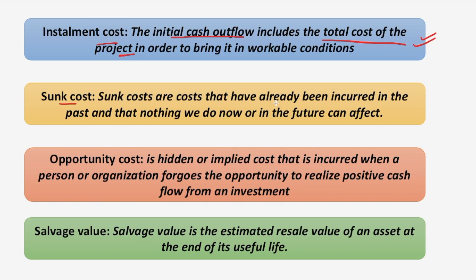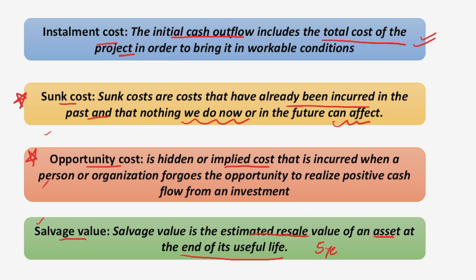The second is sunk cost — costs that have already been incurred in the past and cannot affect the future; they are irrelevant. The third is opportunity cost — the next best thing foregone; it is an implied cost. The fourth is salvage value — the estimated resale value of an asset at the end of its useful life. For example, machinery purchased with a five-year life will have a realizable value after five years as salvage value. While calculating cash flows you subtract the salvage value because it is the amount you receive after the end of the asset's useful life.